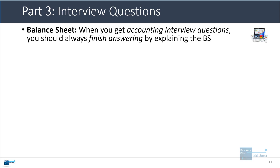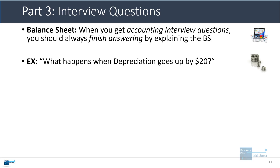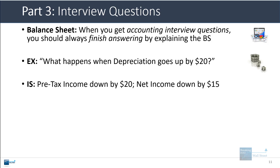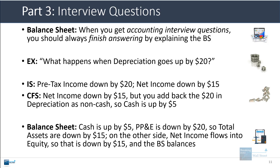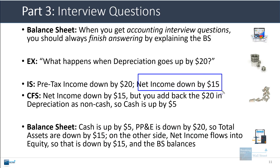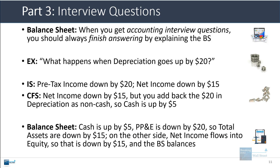For interview questions, when walking through three financial statements after a specific change, always go through the income statement and cash flow statement first, then finish with the balance sheet. For example, if depreciation goes up by 20: on the income statement, pre-tax income goes down by 20, and at a 25% tax rate net income falls by 15. On the cash flow statement, net income is down 15 but depreciation is non-cash so you add back 20 — cash is up by 5. On the balance sheet, cash is up 5 and PP&E is down 20, so total assets are down 15; equity is also down 15 because net income fell by 15, so the balance sheet balances.